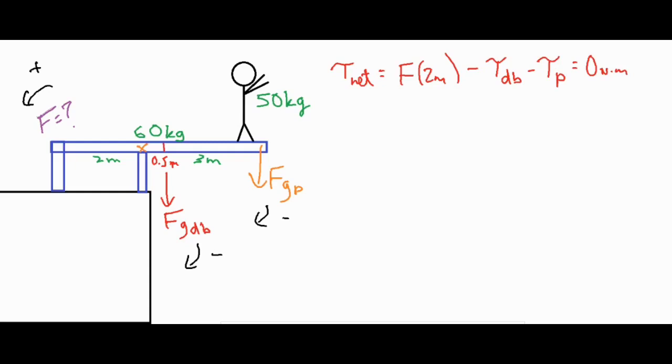And then subtract the torque of the person and that will give us zero newton meters. We know the sum is going to be zero because there is no angular acceleration on the board itself. So let's go ahead and plug in all of our values so that we can solve for the torque of both of those objects and then solve for that unknown force.